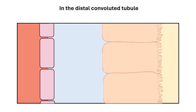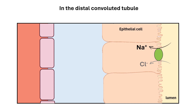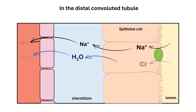This part of the nephron is lined by epithelial cells. On the luminal side of these cells, there is a sodium chloride transporter. This channel reabsorbs one sodium and one chloride ion together from the tubule into the cell. Sodium is then reabsorbed along with water into the interstitium and then into the bloodstream.